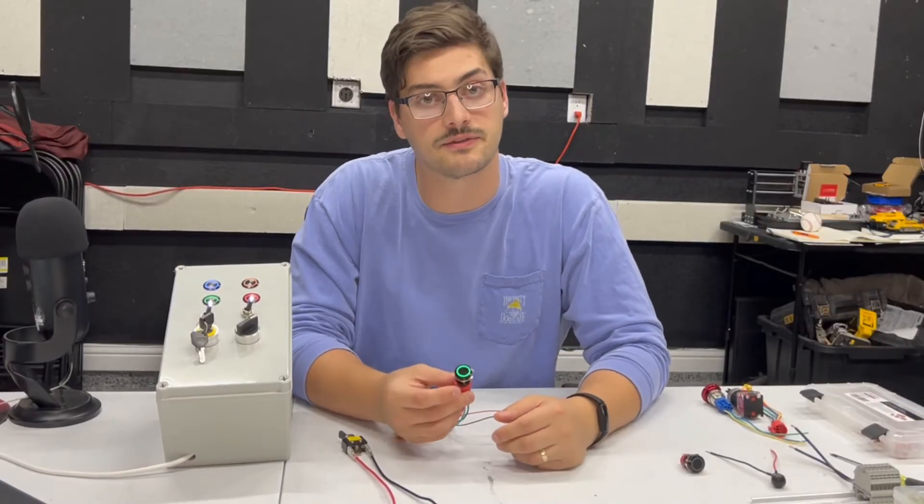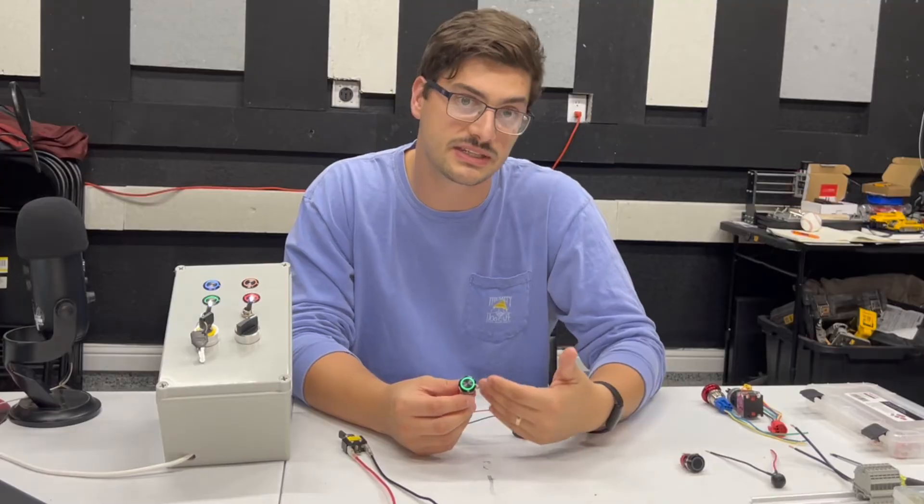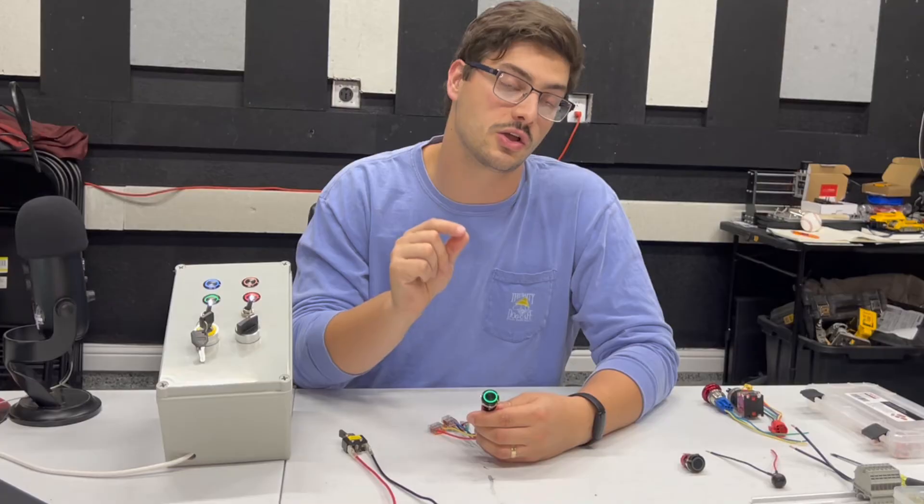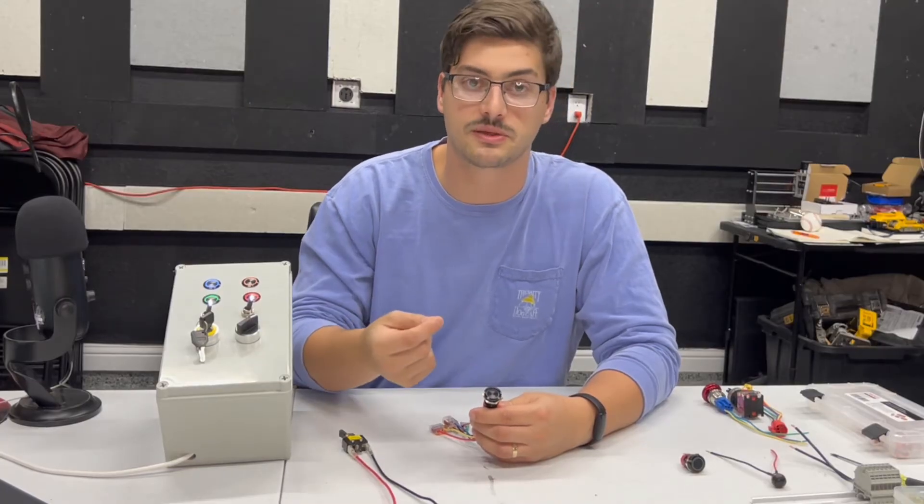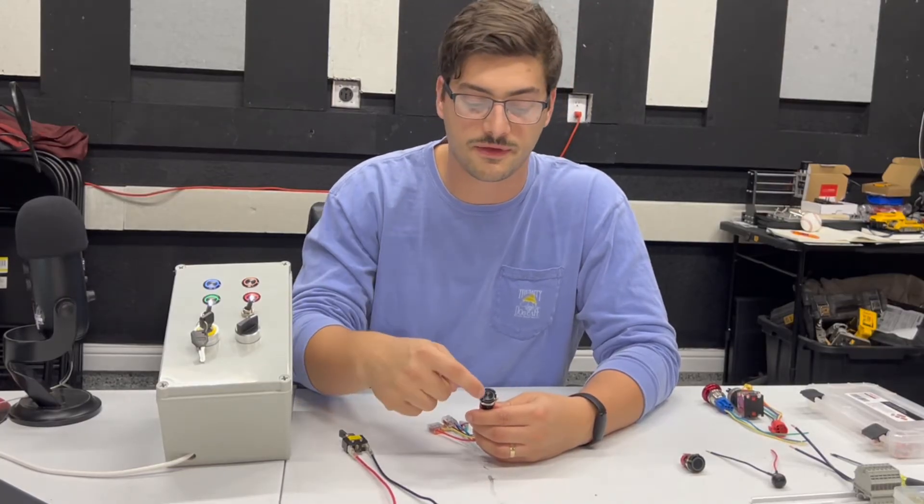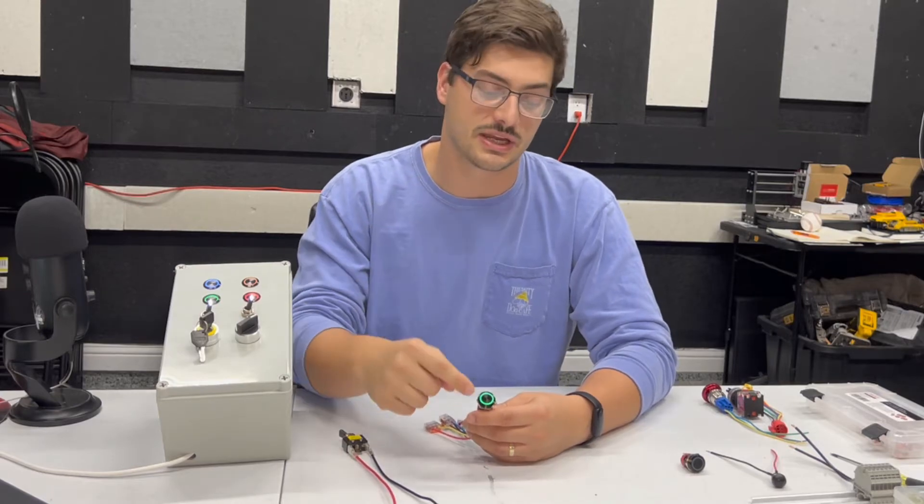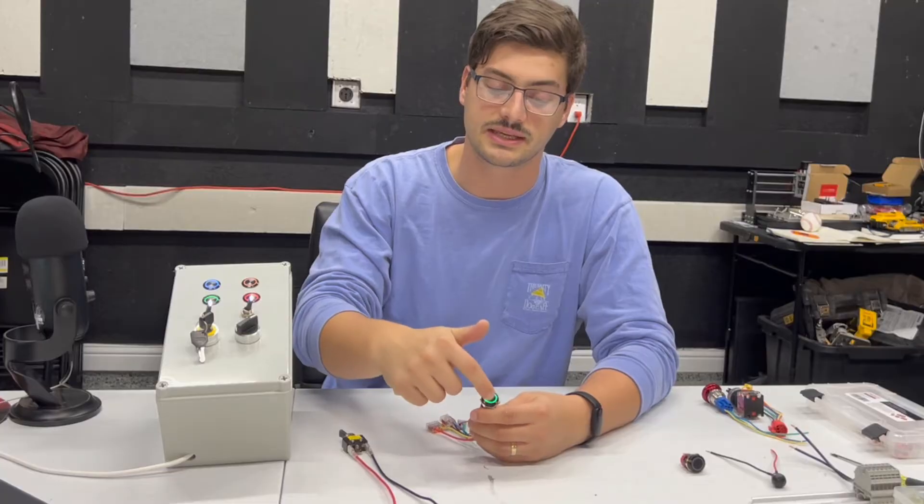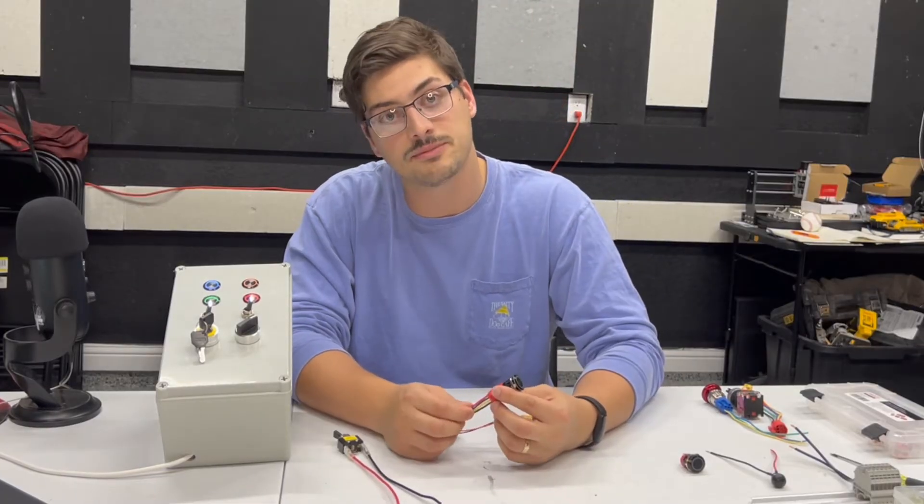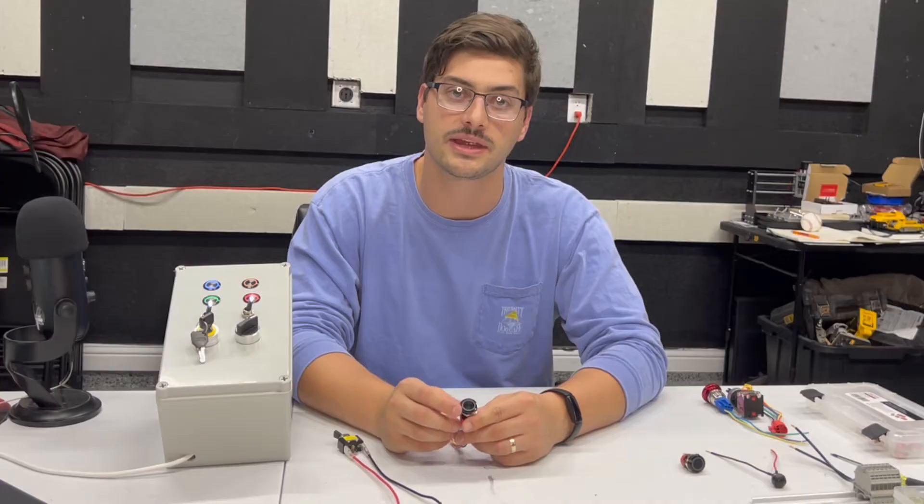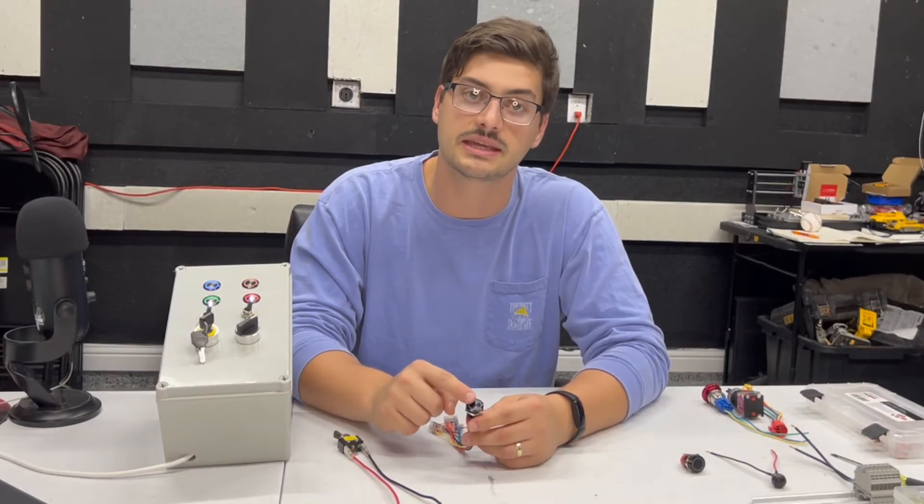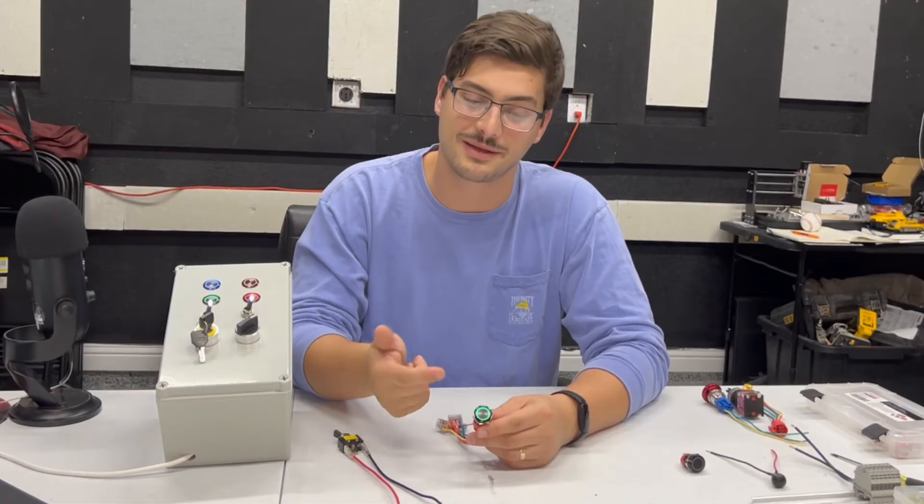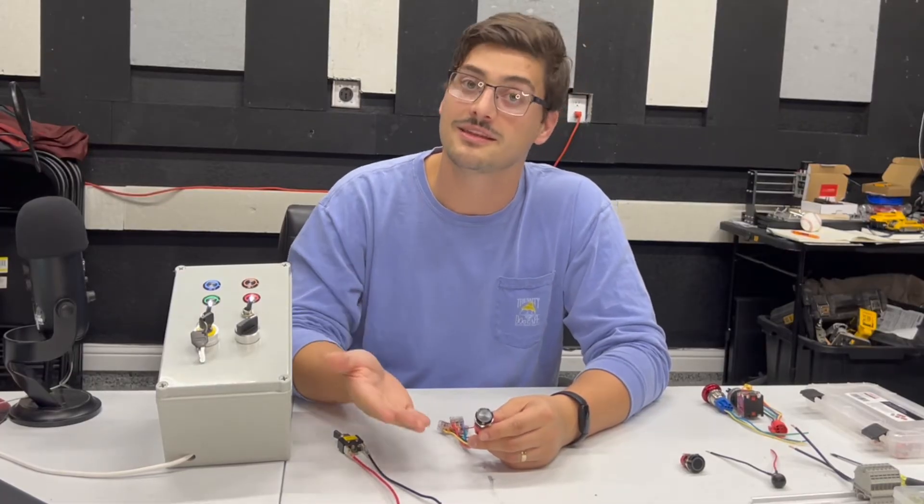So using the exact same wiring configuration that we just had with the momentary push button where the LED was connected to the normally closed contact and when we push the button in the LED goes off, you can now see that I get the same functionality that I was getting before by having to hold it, but now I can release it and leave it in place. So now with the exact same normally open, normally closed configuration, now I have the LED connected to the normally open terminal. So once I push the button in, the light comes on. When I push it again, the light turns off.